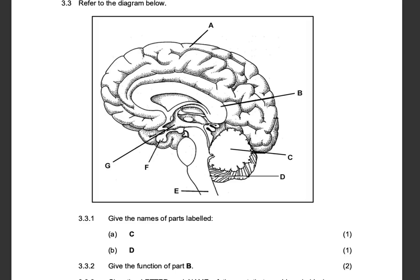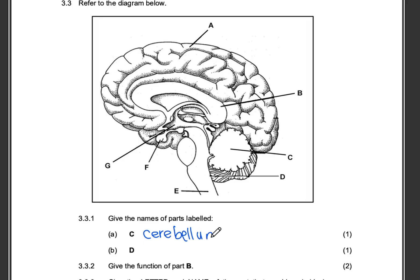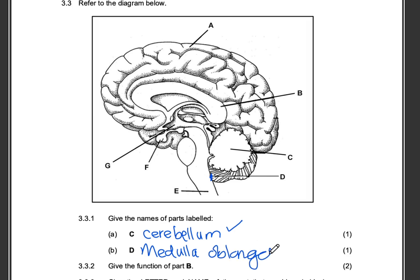The names of the parts labeled C and D. So C is obviously the cerebellum — one mark. Then D, looking at where it is pointing, D is the medulla oblongata — one mark.